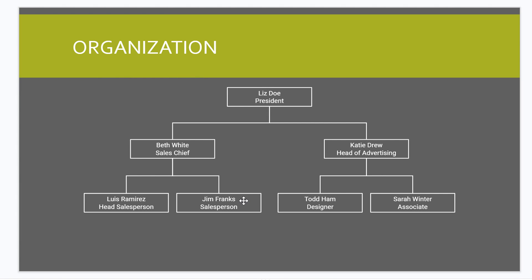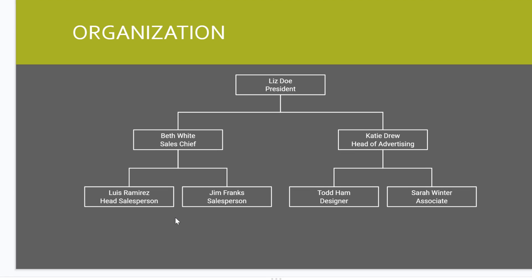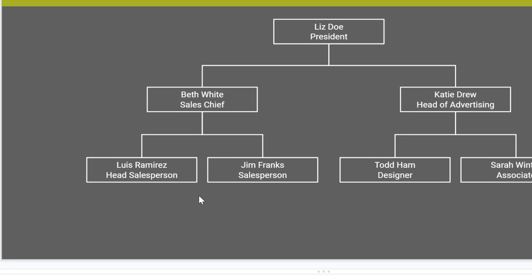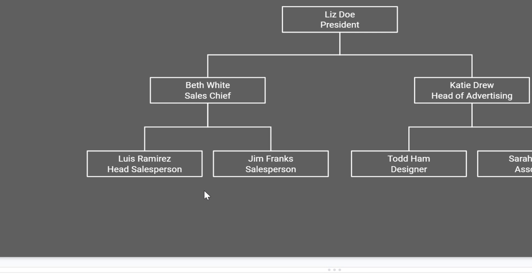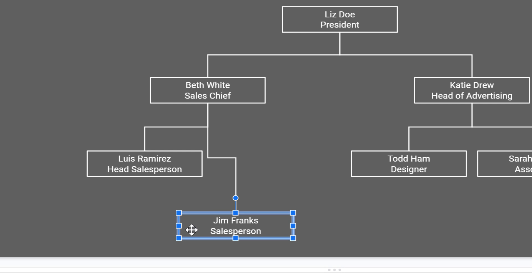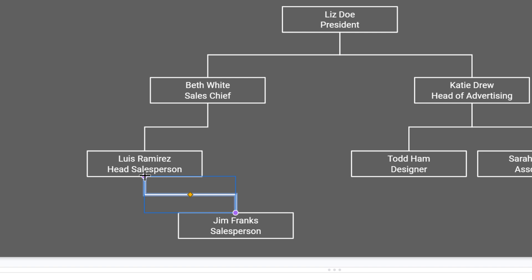Jim Franks should actually be underneath Luis Ramirez. Making this change is going to be a little tricky, so you might want to follow my steps exactly until you get some practice at it. To move a box, click and drag it to where you want it. Then click on the line to select it. Handles appear at either end, and you can click and drag the handle that you want to move. As you move over a box, anchor points appear for you to drop the handle onto. These boxes are now connected.